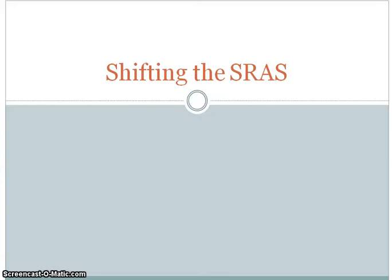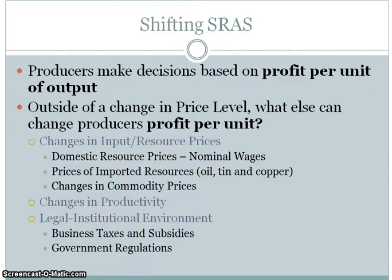This screencast is on the determinants of the short-run aggregate supply curve and shifting the SRAS. When we're talking about the determinants for the short-run aggregate supply, what we're looking at here are the per-unit costs of production. Remember, if anything talks about a change in the price level, that's a movement along the aggregate supply curve — not an actual shift. We're looking at things outside of the price level changing that will shift the short-run aggregate supply.